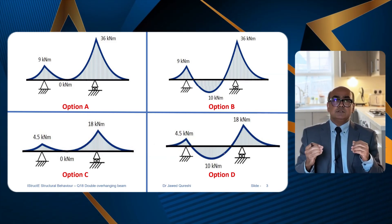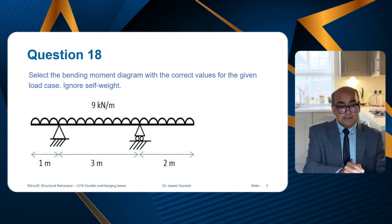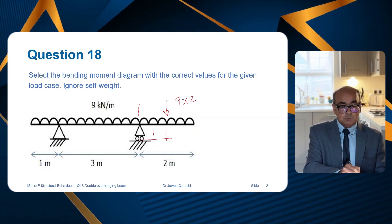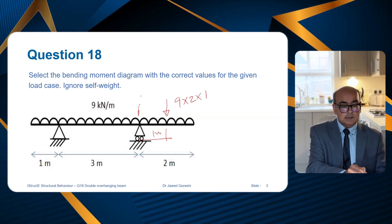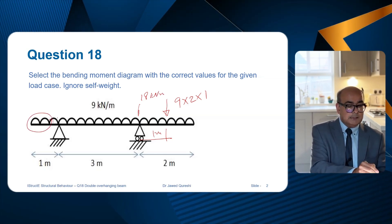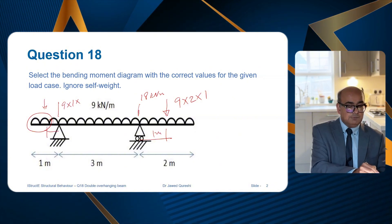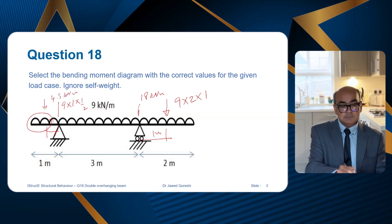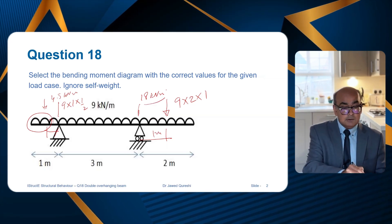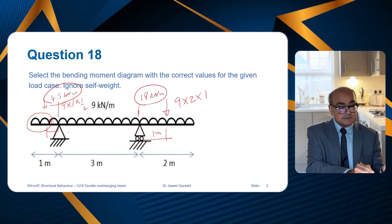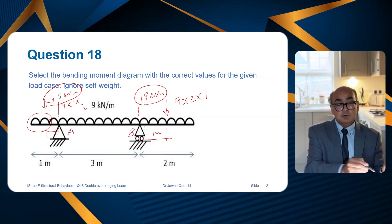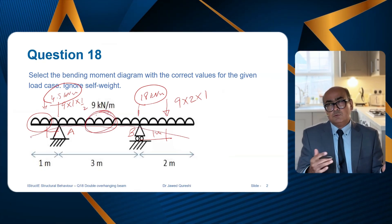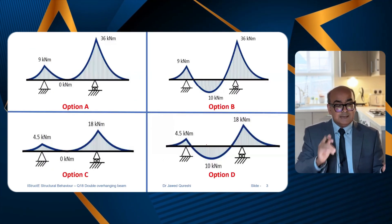Looking at these options, I will use an elimination technique. The moment on the right overhang will be 9 times 2 times 1, giving 18 kNm. The moment on the left overhang will be 9 times 1 times half of 1, giving 4.5 kNm. So if I call the left support A and the right support B, I have 4.5 kNm on the left and 18 kNm on the right. I'm not yet sure what the maximum moment will be in the central portion.